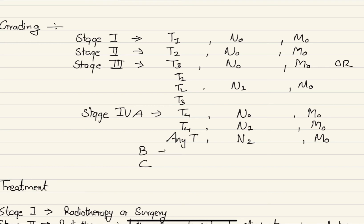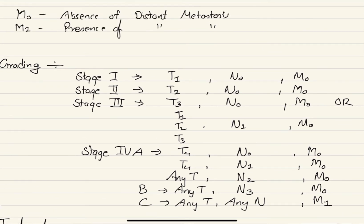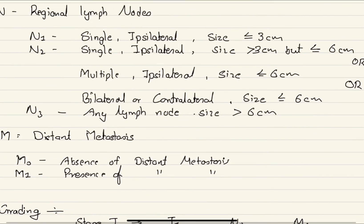Stage 4C is any size of tumor with any range of lymph node involvement but with presence of distant metastasis (M1). This is how we classify or grade the carcinoma of tongue on the basis of TNM classification.